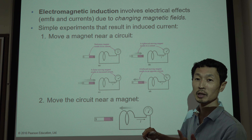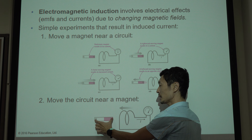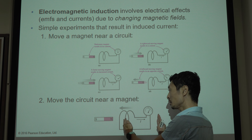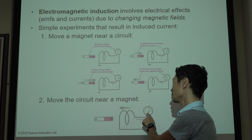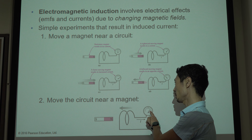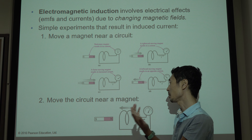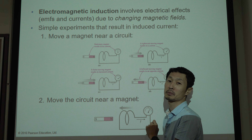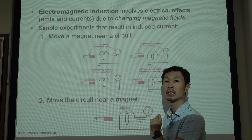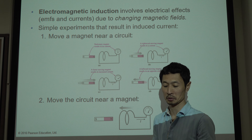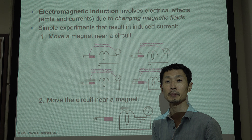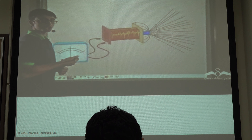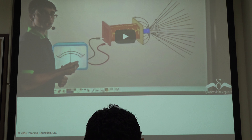Also, in the opposite way: you fix the magnet and move the circuit toward the magnet, then you also get current. Because the magnetic field in that part of the circuit is changing as a function of time. We can look at this induced current here.